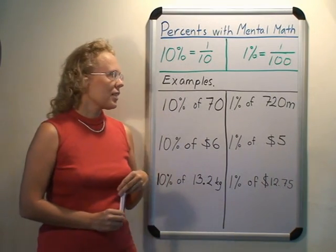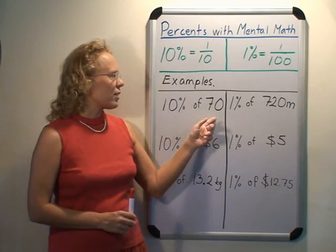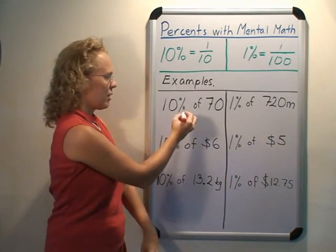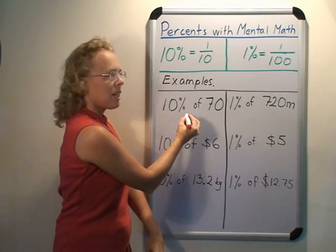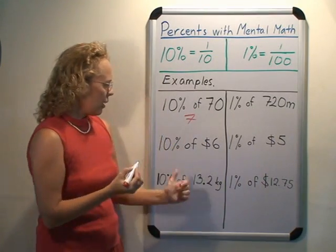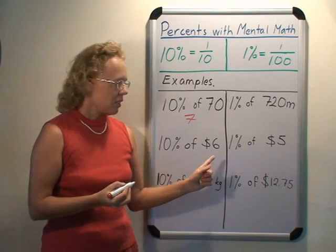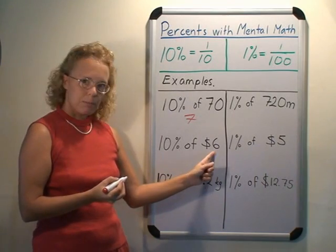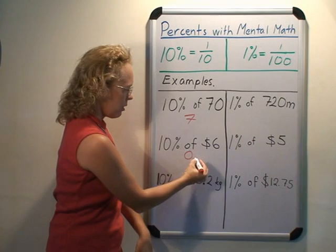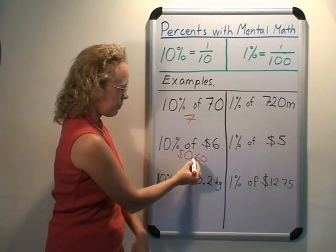Here are some easy examples. 10% of 70: we divide by 10, so it is 70 divided by 10 = 7. 10% of $6: divide by 10 and you get 60 cents, or $0.60.